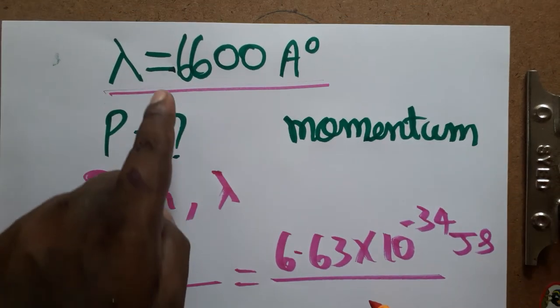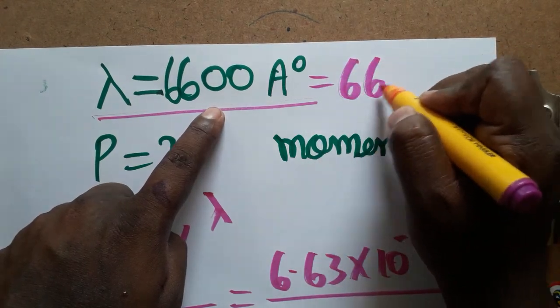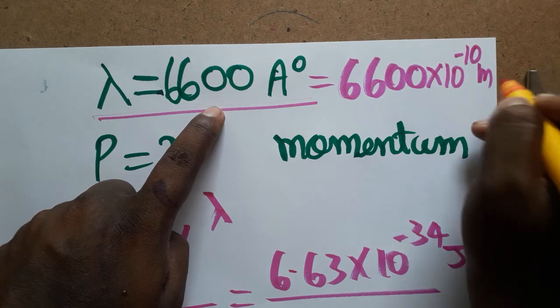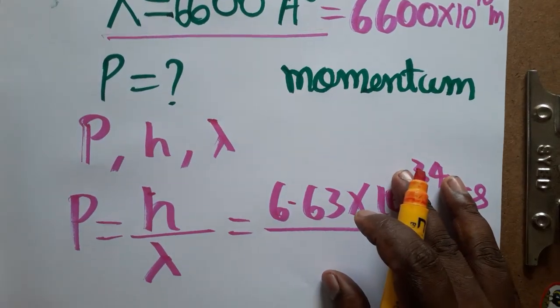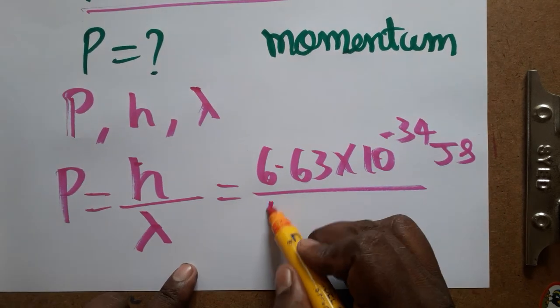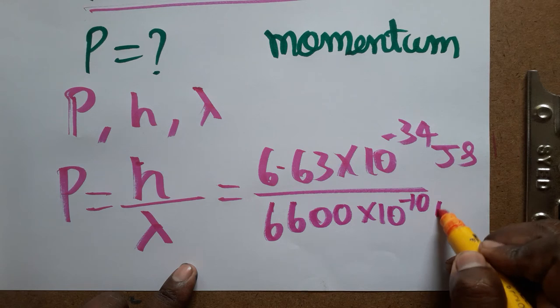And the wavelength is given in the angstrom unit, we should convert into the meter. So 6600 into 10 power minus 10 meter. Everything we have to do in SI unit, then only we will get the proper value.